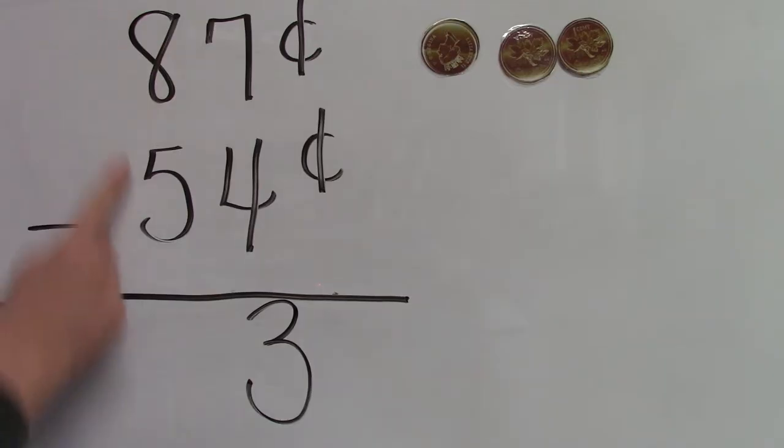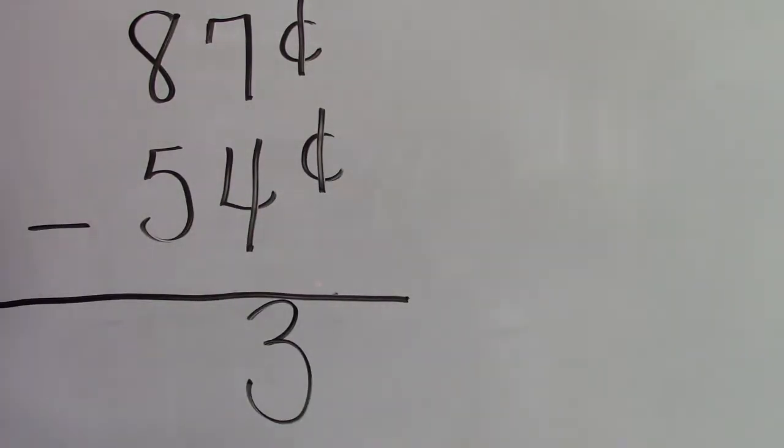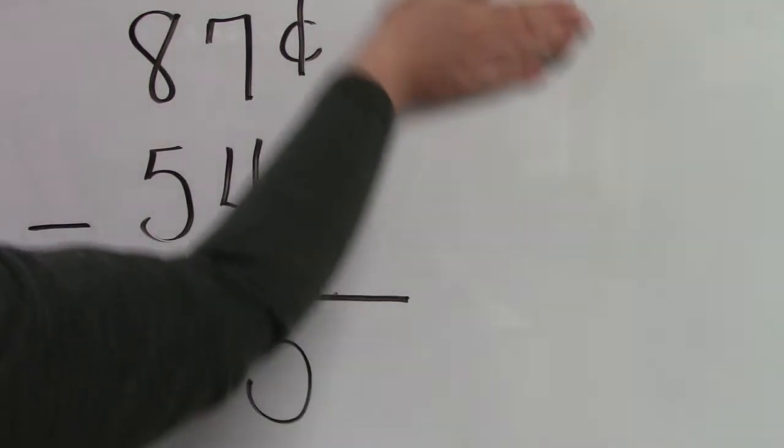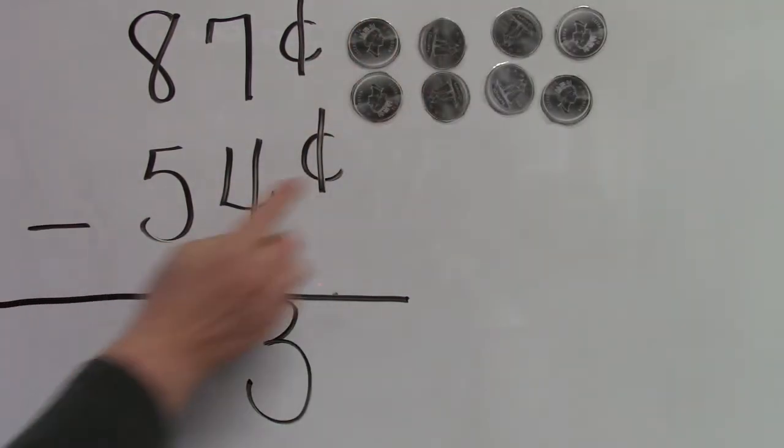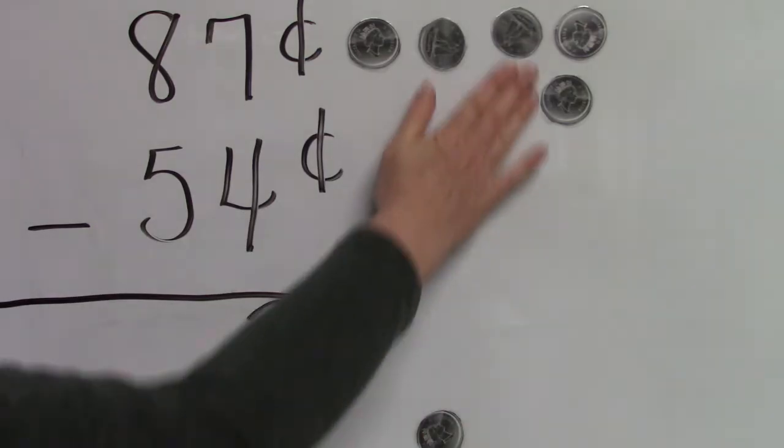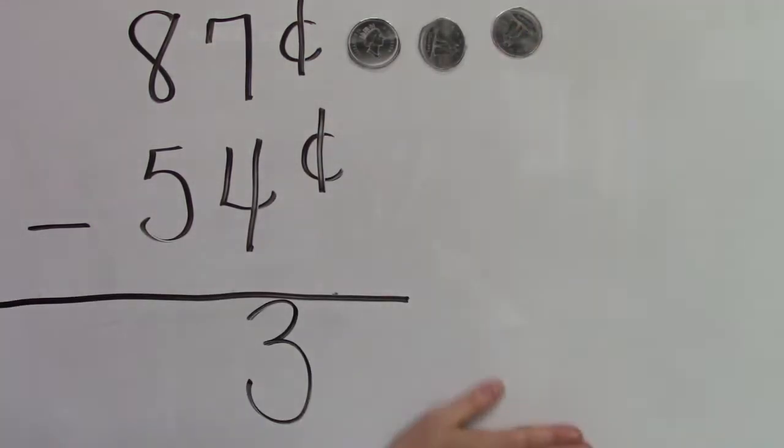When I move over to our tens place I'm not going to use pennies anymore. I'm going to use dimes. Eight dimes take away five dimes. One, two, three, four, and five. How many would be left? You're right. 87 cents take away 54 cents equals 33 cents.